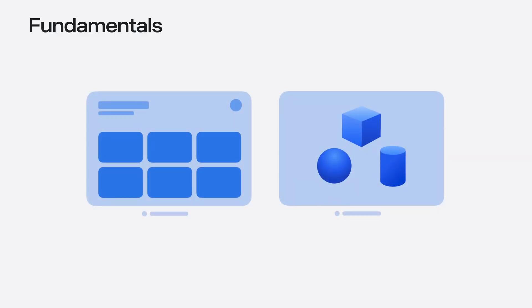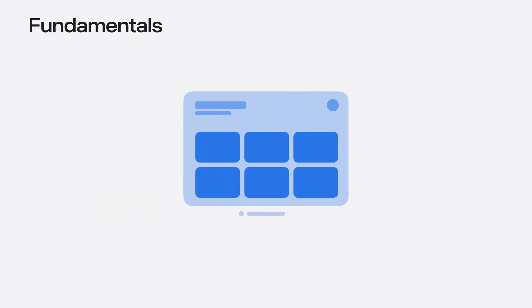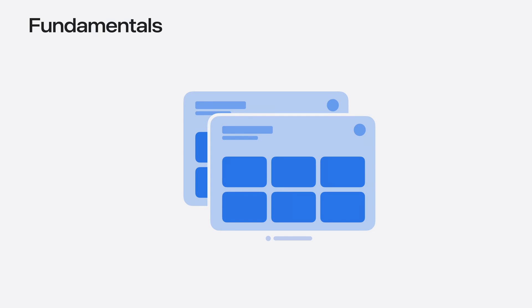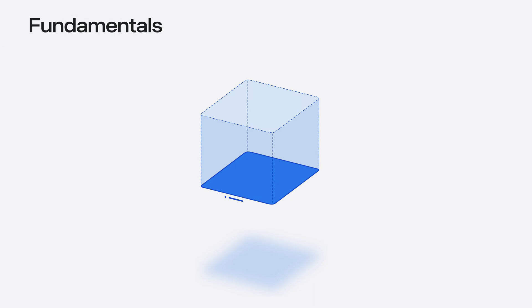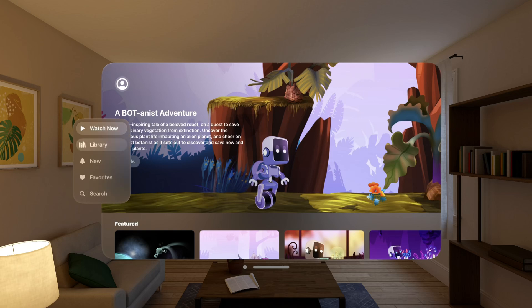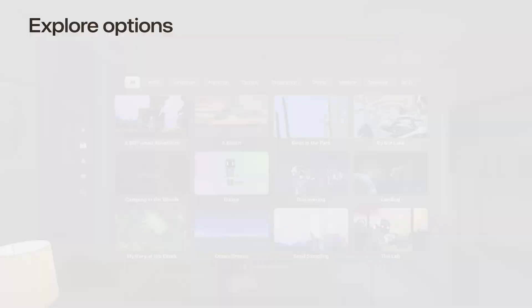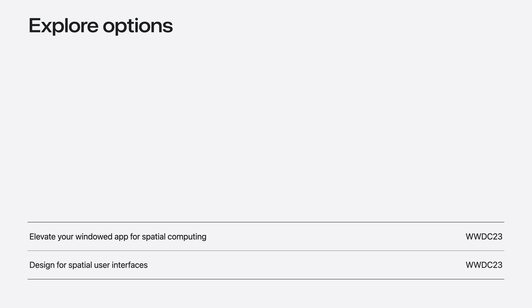With individual windows, people can use different parts of your app at the same time, and having multiple instances of the same interface can be really powerful. People can use system controls to independently manipulate each window, like being able to resize, reposition, or scale it. Each window can take advantage of platform-specific features. For example, on VisionOS, a window can contain 3D content by using a volumetric window style. While multiple windows are powerful, using a single top-level view like a tab view can simplify the experience. To learn more about tab view and other top-level views, check out Elevate Your Window to App for Spatial Computing. To learn when multiple windows are appropriate in VisionOS, check out Design for Spatial User Interfaces.